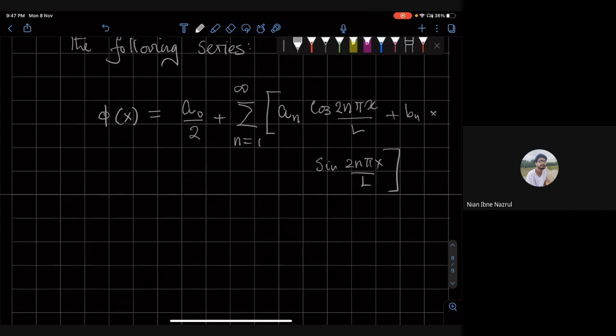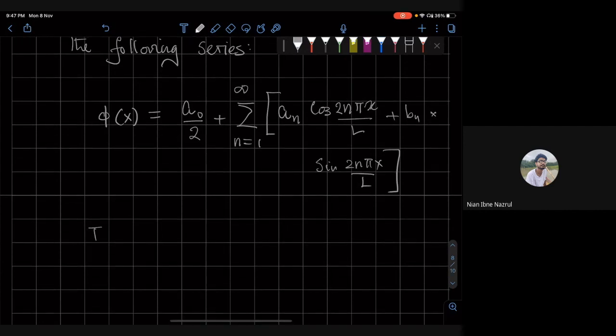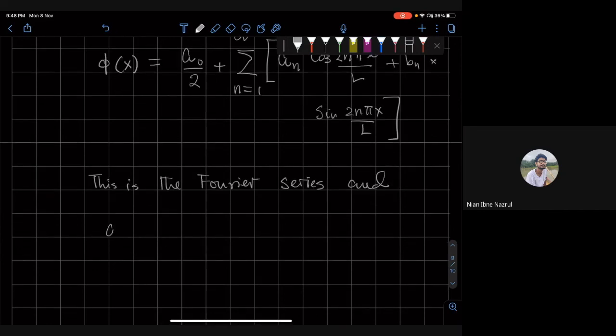Okay, so this is the Fourier series, and A sub n and B sub n are the Fourier coefficients.